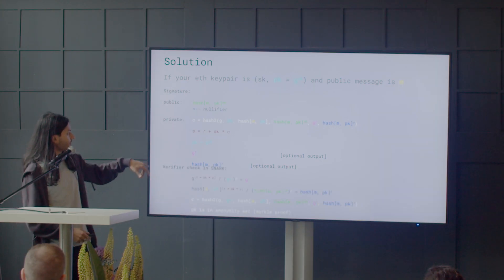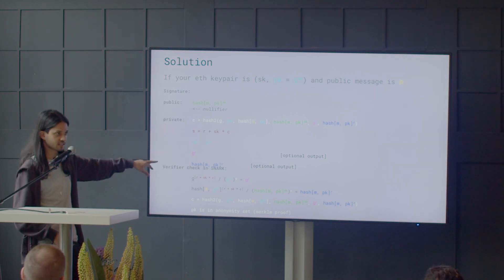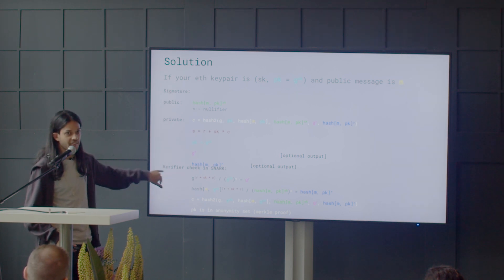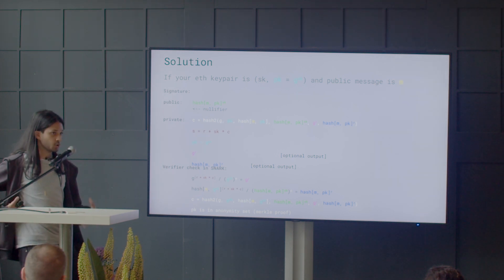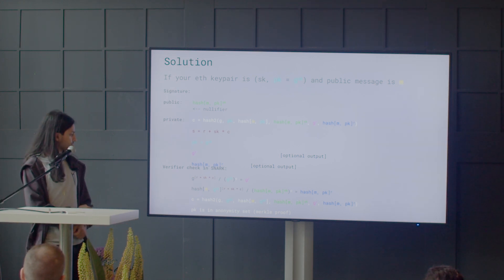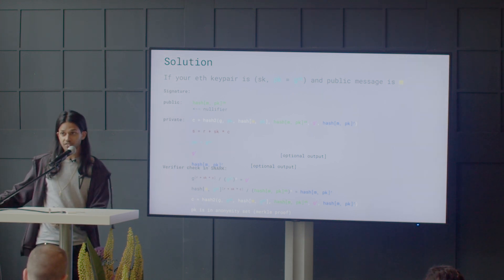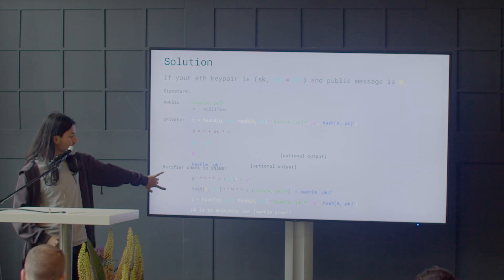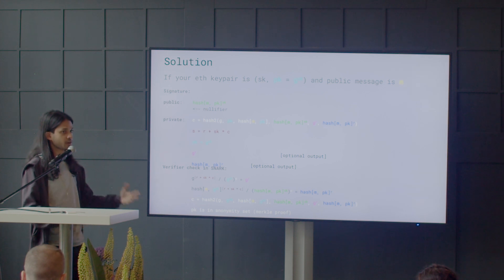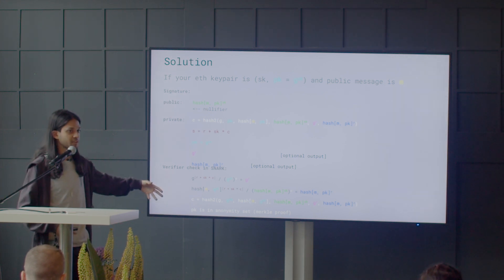Once these signals — the nullifier and these two additional values — have been output by the wallet, inside a ZK-SNARK we can just verify that these values were calculated correctly. This verifies that the user is who they claim to be and that this nullifier was calculated correctly. The SNARK also has to do whatever is application-specific — both verify the signature and nullifier, and ensure that the public key is in the anonymity set, for instance for an airdrop or a voting protocol.